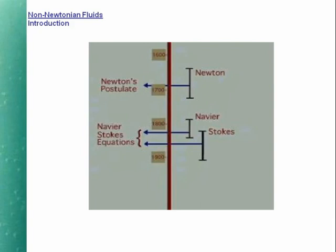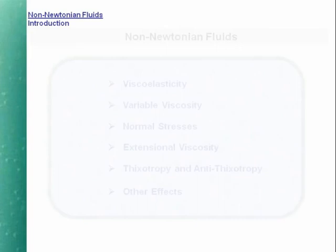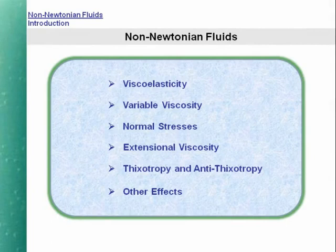It is now common knowledge that many liquids exhibit behavior which cannot be predicted on the basis of the Navier-Stokes equations. Such behavior is called non-Newtonian. In this film, we shall investigate non-Newtonian behavior under six headings. The various headings are not meant to be mutually exclusive, and a given non-Newtonian liquid can manifest a number, sometimes all, of the effects we shall discuss.